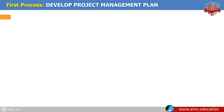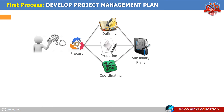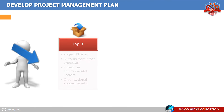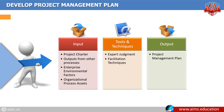First process: develop project management plan. It is the process of defining, preparing, and coordinating all subsidiary plans and integrating them into a comprehensive project management plan. Key benefit: it is a central document that defines the basis of all project work. Here are the inputs, tools and techniques, and outputs of this process.